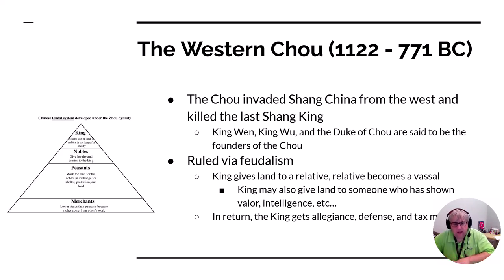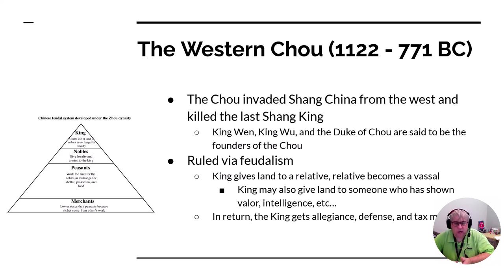The king gives land usually to somebody who has done a good deed or given favor to the king. Because the king gives land to the vassals, the vassals in exchange give allegiance, money, and agree to defend the king as well.